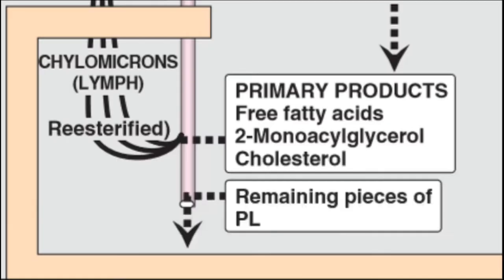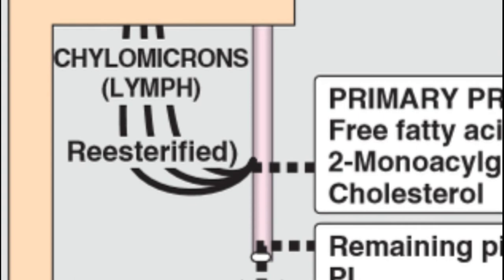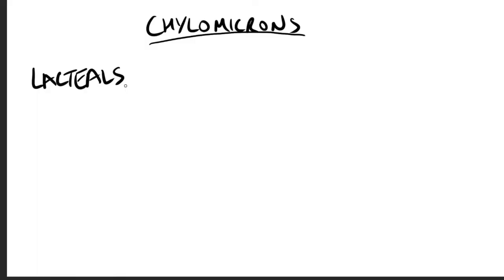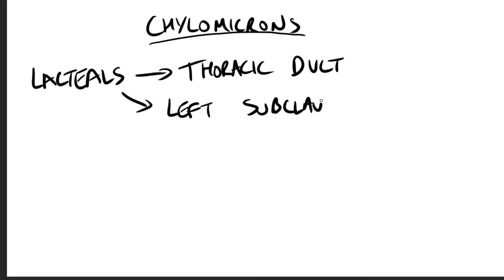All right, now chylomicrons. The particles are released by exocytosis from the enterocytes into the lacteals, which is the lymphatic vessels originating in the villi of the small intestine. The presence of these particles in the lymph after a lipid-rich meal gives it a milky appearance. This lymph is called chyle and the particles are named chylomicrons. So they follow the lymphatic system to the thoracic duct and are then conveyed to the left subclavian vein where they enter the blood.